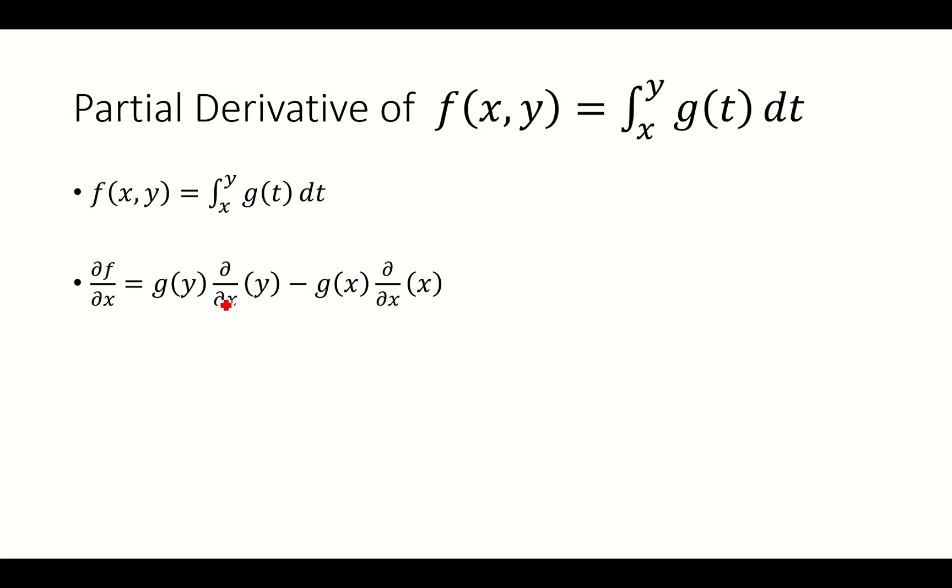So the derivative of y with respect to x is 0, so you have g of y times 0, minus g of x, and then the partial derivative of x with respect to x is 1, so that gives us negative g of x.